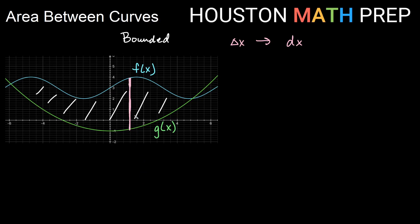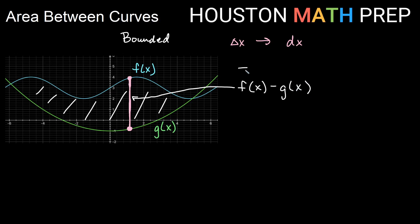The easy way to find the distance between two values is to take the bigger value minus the smaller value. Looking at the rectangle, the top of the rectangle is the bigger y value — the top function — and the bottom is the smaller y value. So we're always doing top minus bottom: f of x minus g of x, assuming f is always on top and g is always on the bottom.